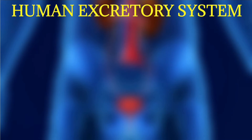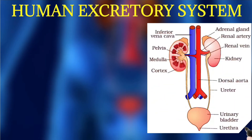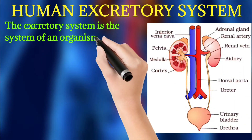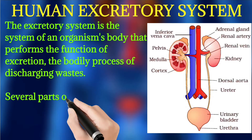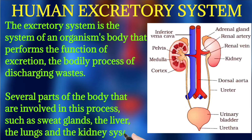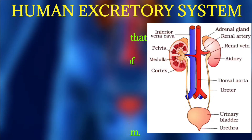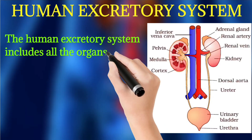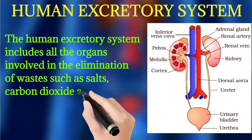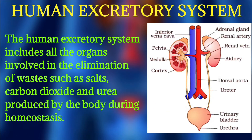The human excretory system is the system of an organism's body that performs the function of excretion — the bodily process of discharging waste. Several parts of the body are involved in this process, such as the sweat glands, the liver, the lungs, and most importantly the kidney system. The human excretory system includes all the organs involved in the elimination of waste such as salts, carbon dioxide, and urea produced by the body during homeostasis.